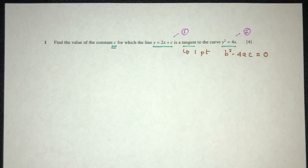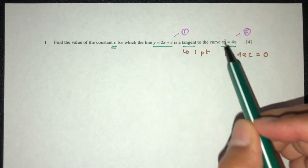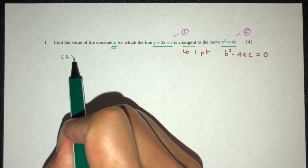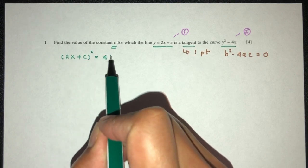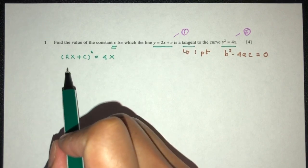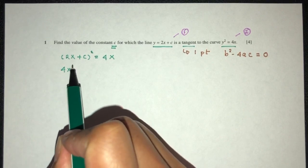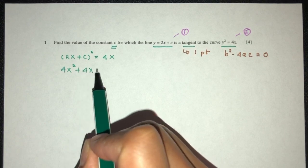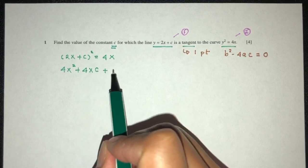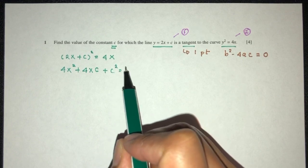Let's try to solve this simultaneous equation. y is this, replace y here, you will have 2x plus c squared equal to 4x. Then, we have to expand this. That will give you 4x squared plus 4xc plus c squared, that will give you 4x.